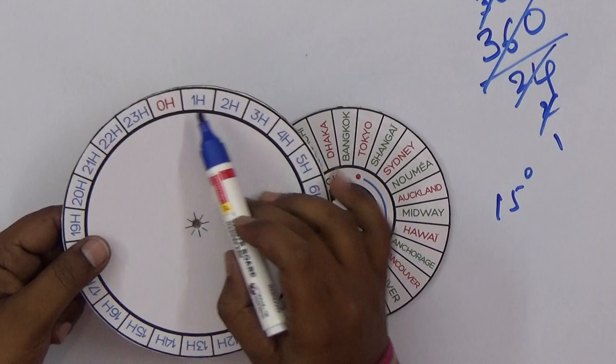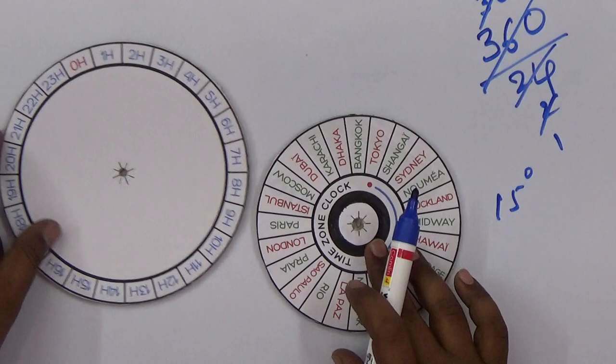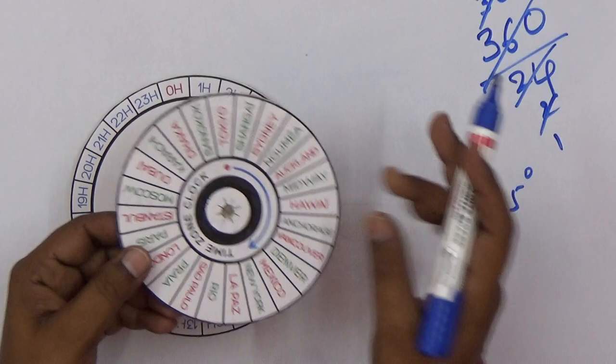On this second circle, I adjusted some countries. The specialty of these countries is that from country to country, the gap is exactly one hour.